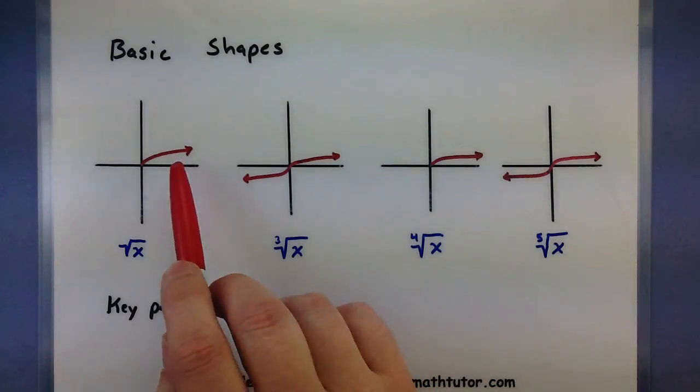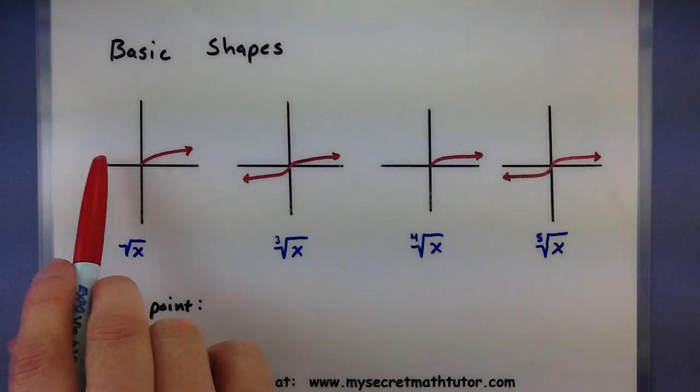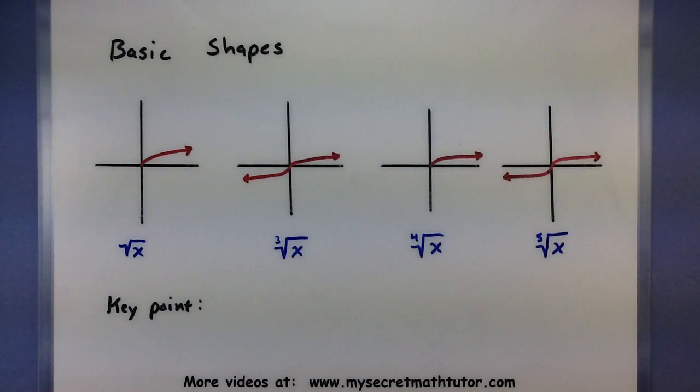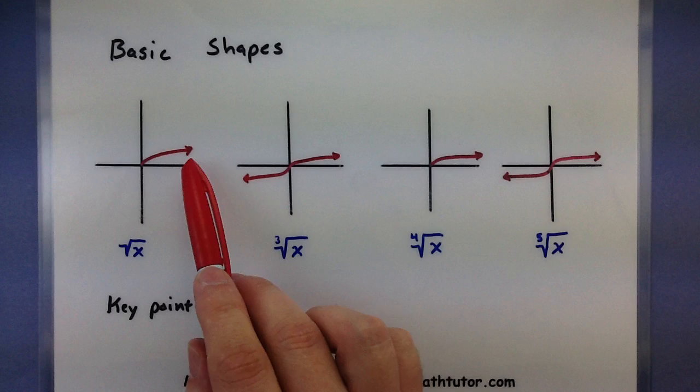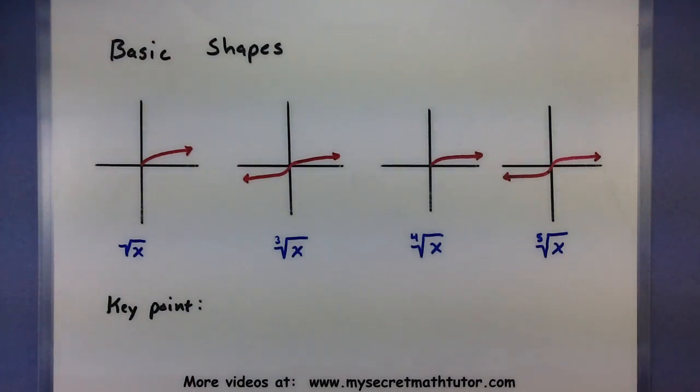Now sometimes people look at these and they say wait a minute does this thing just level off, is there an asymptote or something in there? And the answer is no. This actually does keep increasing it just does it very slowly.